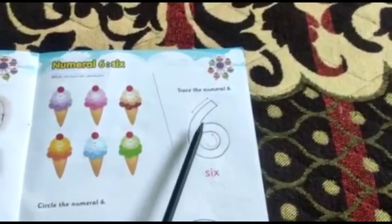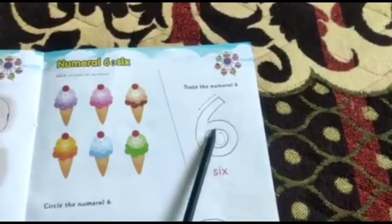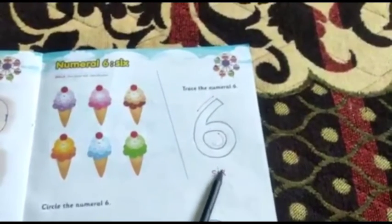How many ice creams? Ice cream cones. One, two, three, four, five, six. How many? Six cones. Six ice cream cones. This is the numeral six, S-I-X-6. You will remember the spelling of it.